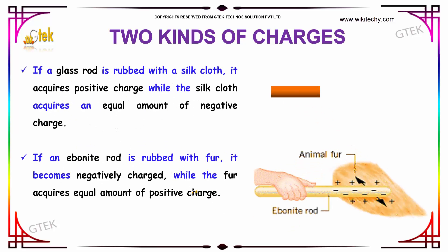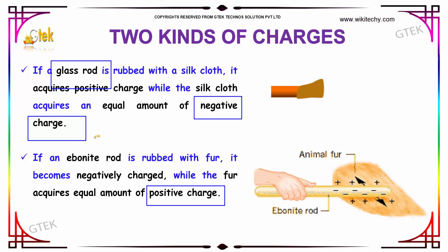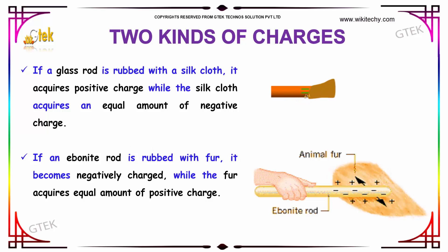Let us move on to the concept of discussing the two kinds of charges. The first example we will be dealing with is negative charge and positive charge. If a glass rod is rubbed with a silk cloth, the glass rod acquires positive charge while the silk cloth acquires an equal amount of negative charge.